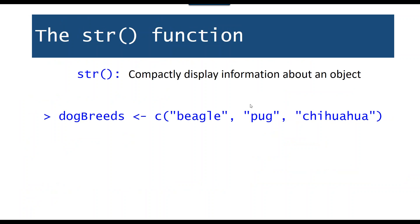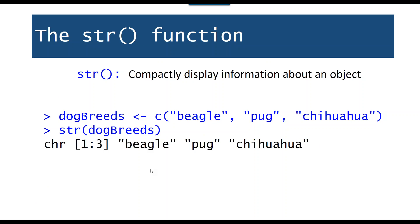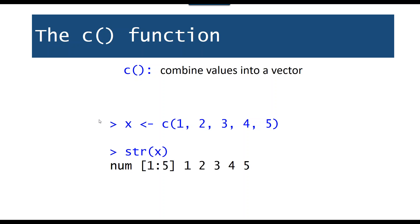I'm going to go over a few different functions and then the different data types in R. The first function is str(), which compactly displays information about an object. Here I create a vector called dog_breeds and assign to it a combination of beagle, pug, and chihuahua. When I call str() on dog_breeds it prints: it's a character vector, it has 3 elements, and here's what they are. The second important function is c(), which combines values into a vector. I can create a vector x and combine 1, 2, 3, 4, and 5. When I call str() on x it tells me this is a numeric vector with five elements.